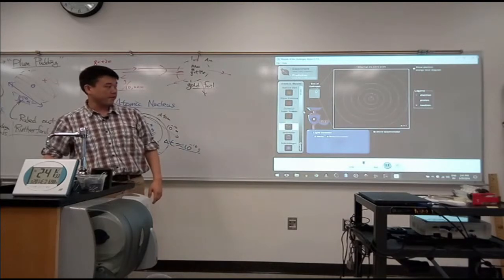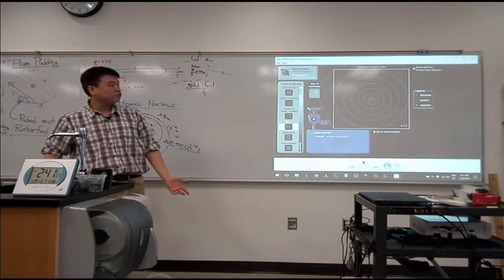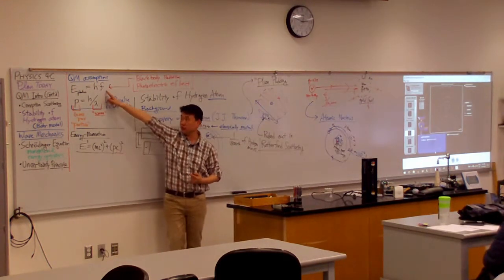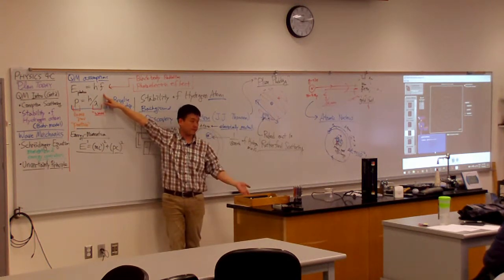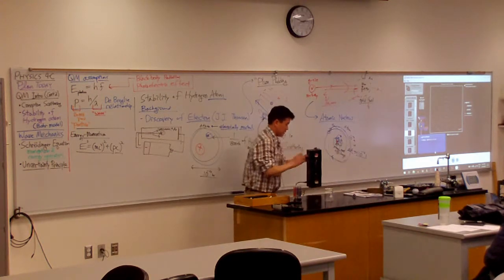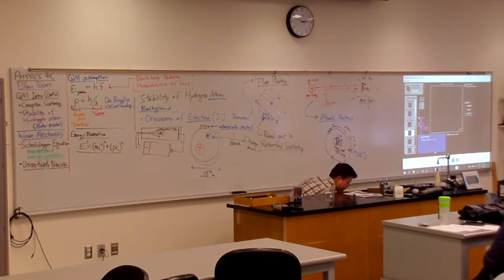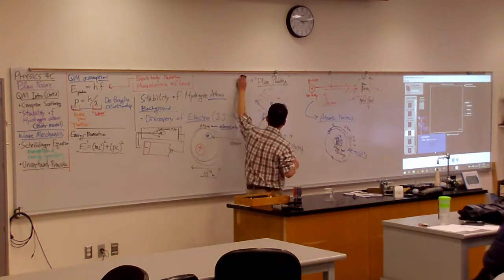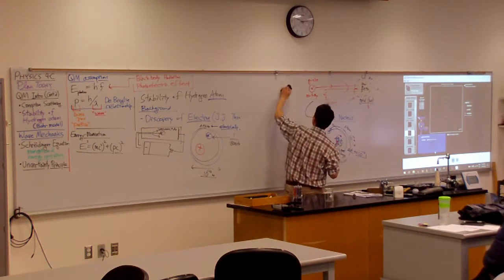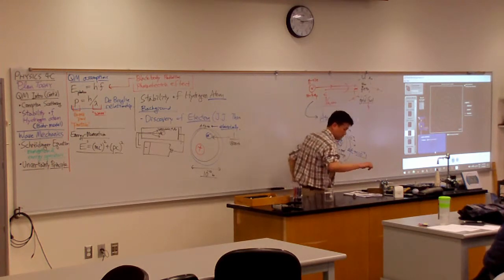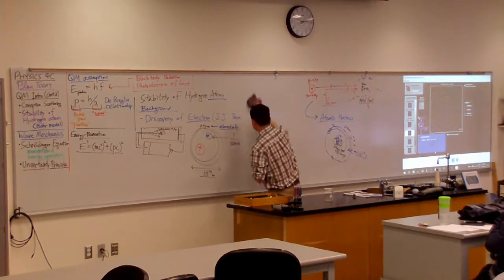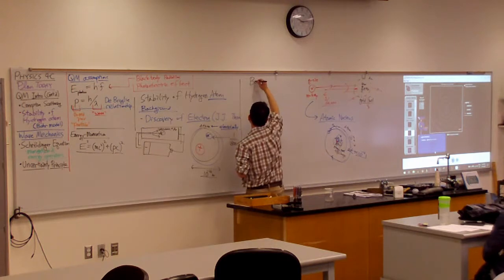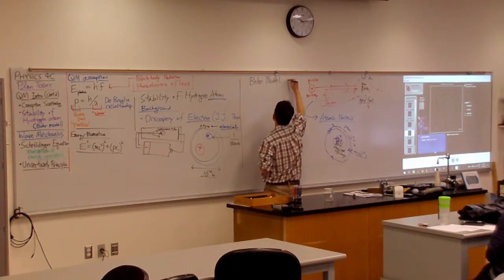What we are going to look at now is the Bohr model. This is the model that led to the correct prediction of energies, which leads to the correct prediction of frequencies, which leads to the correct prediction of the wavelengths that you are seeing. So let me describe the Bohr model. This is the Bohr model of hydrogen.